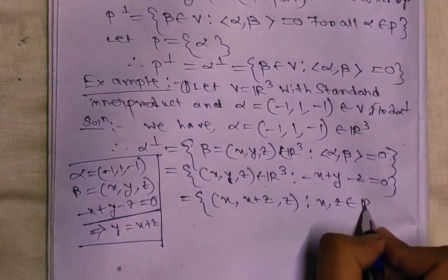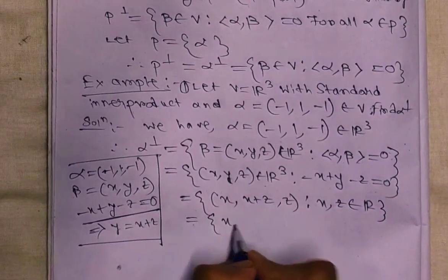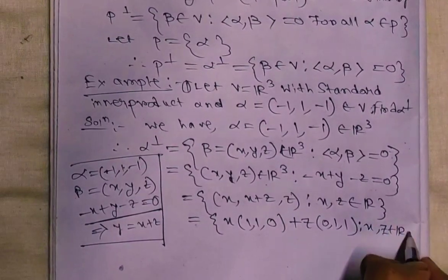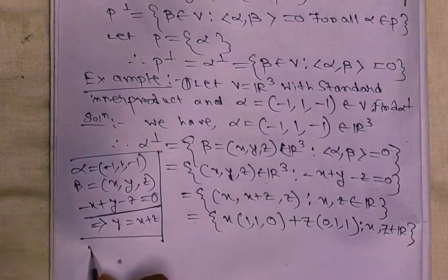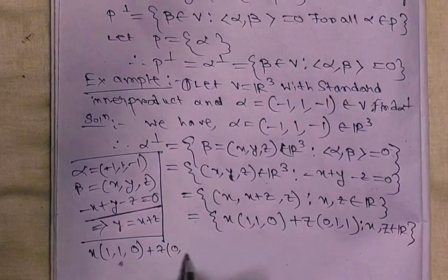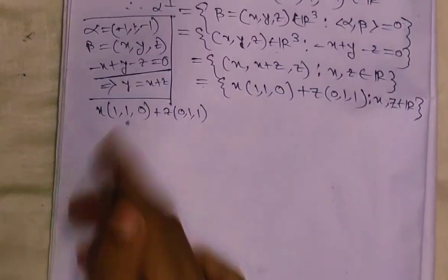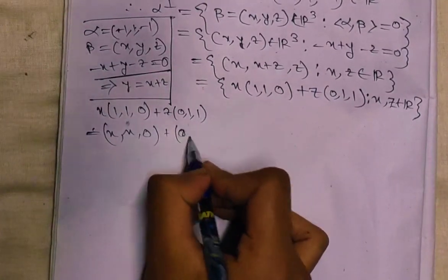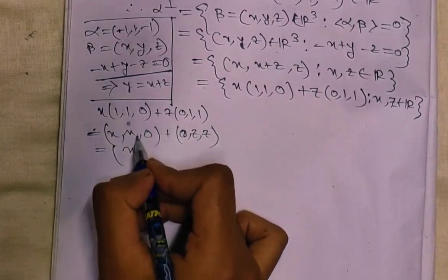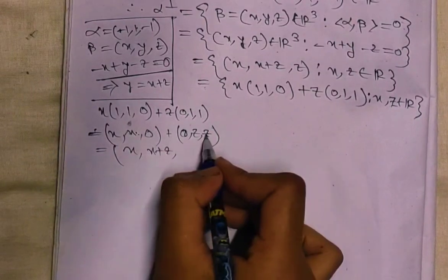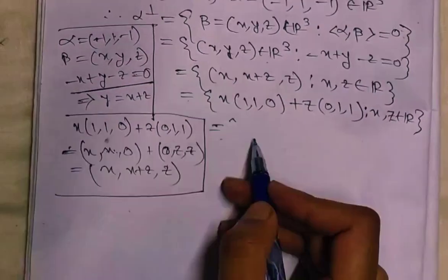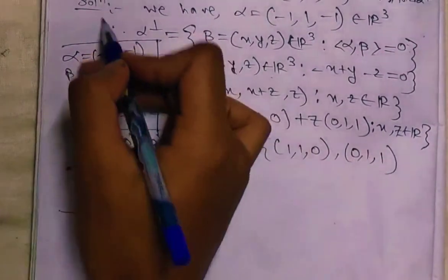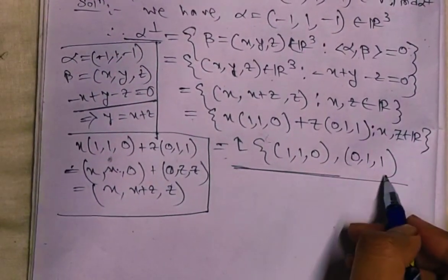So alpha⊥ equals the set of (x, y, z) such that y = x + z, with x and z in R. This equals x·(1, 1, 0) + z·(0, 1, 1) for x, z in R. That is, alpha⊥ equals the linear combination of (1, 1, 0) and (0, 1, 1).